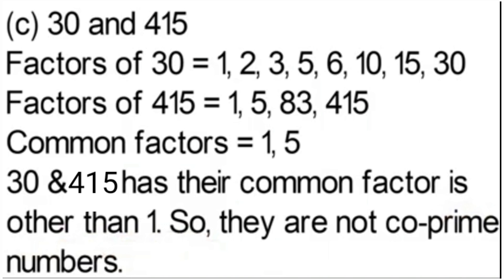Part C: 30 and 415. Factors of 30: 1, 2, 3, 5, 6, 10, 15, 30. Factors of 415: 1, 5, 83, 415. Common factors are 1 and 5 — more than one common factor. So 30 and 415 are not co-prime numbers. The rest of the parts you do in the same manner.